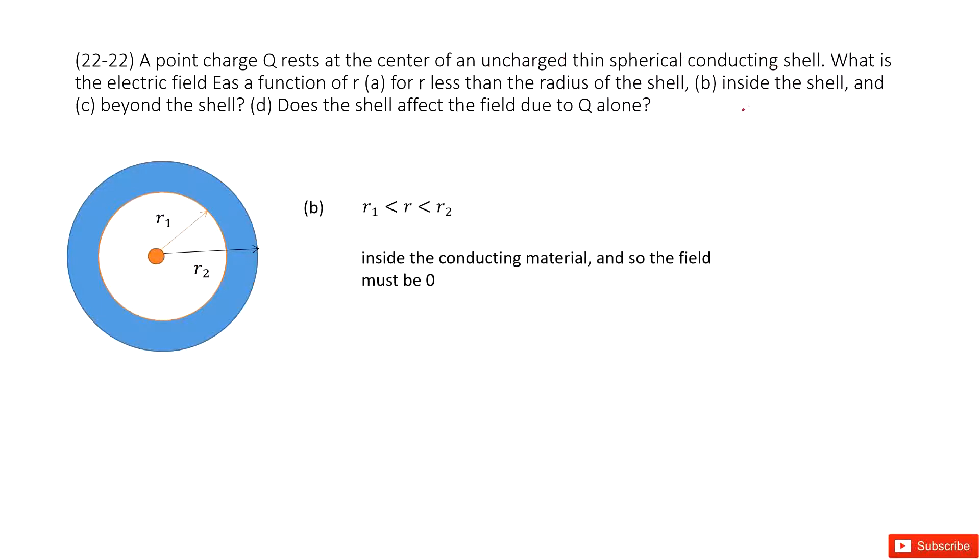The second one asks you to find the electric field inside the shell. So inside the shell, what is the electric field? As we learn in this chapter, this tells us this is a conducting shell. For conducting shell, the electric field inside the conducting object is 0.